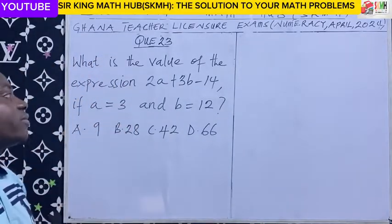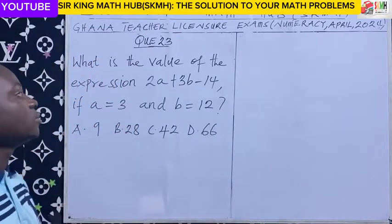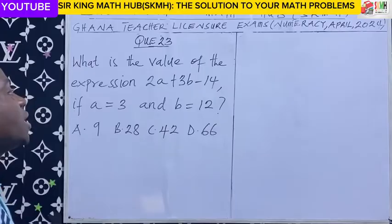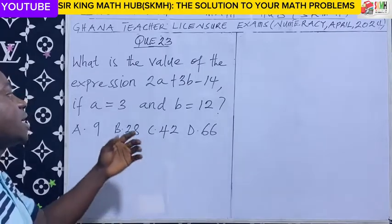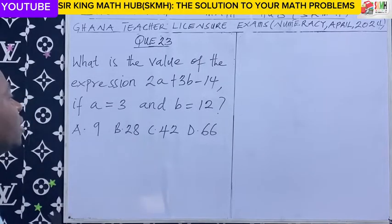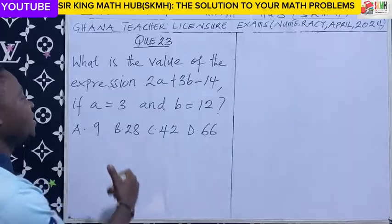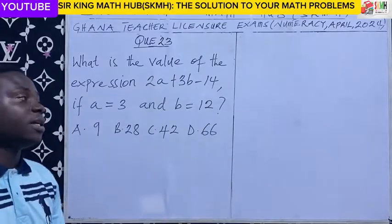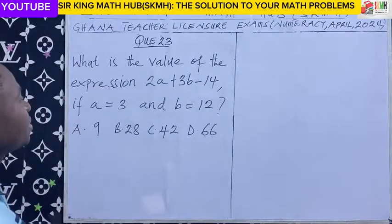What is the value of the expression 2A plus 3B minus 14, if A is 3 and B is 12?